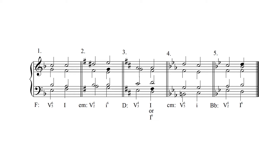In example number two, in the key of E minor, the result will not be a root position tonic triad — it will be a first inversion tonic triad. The reason for this is because the dominant seventh chord is in third inversion.